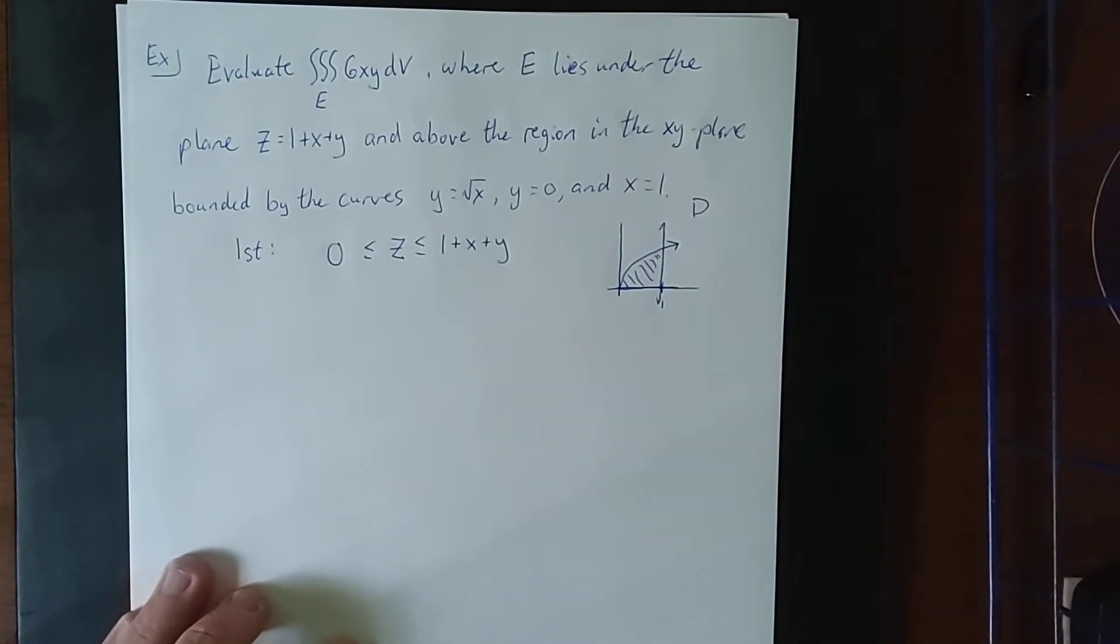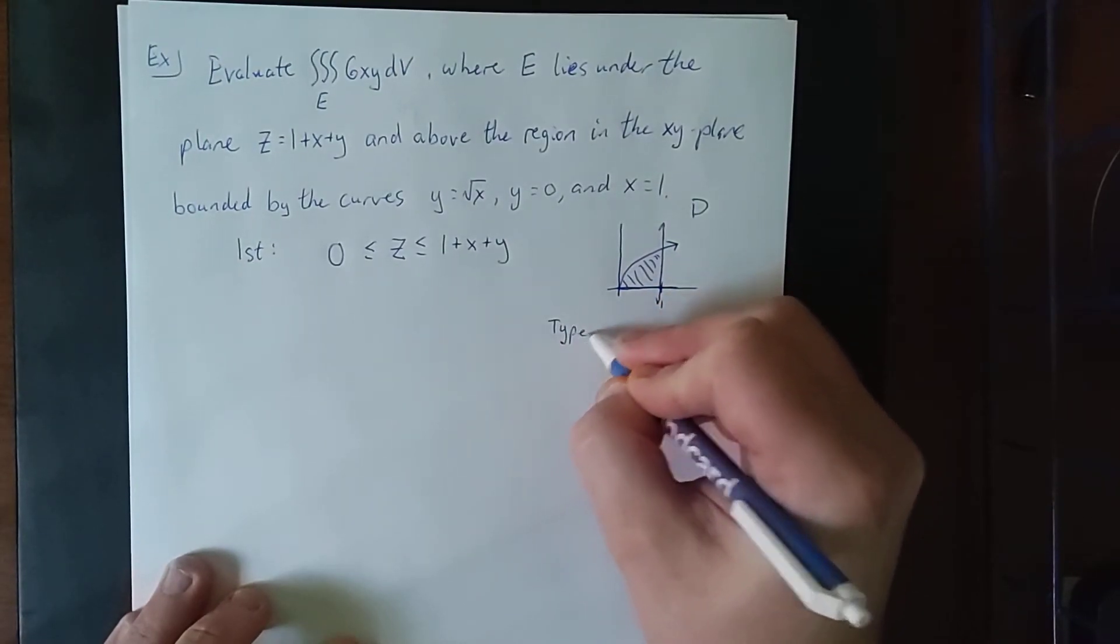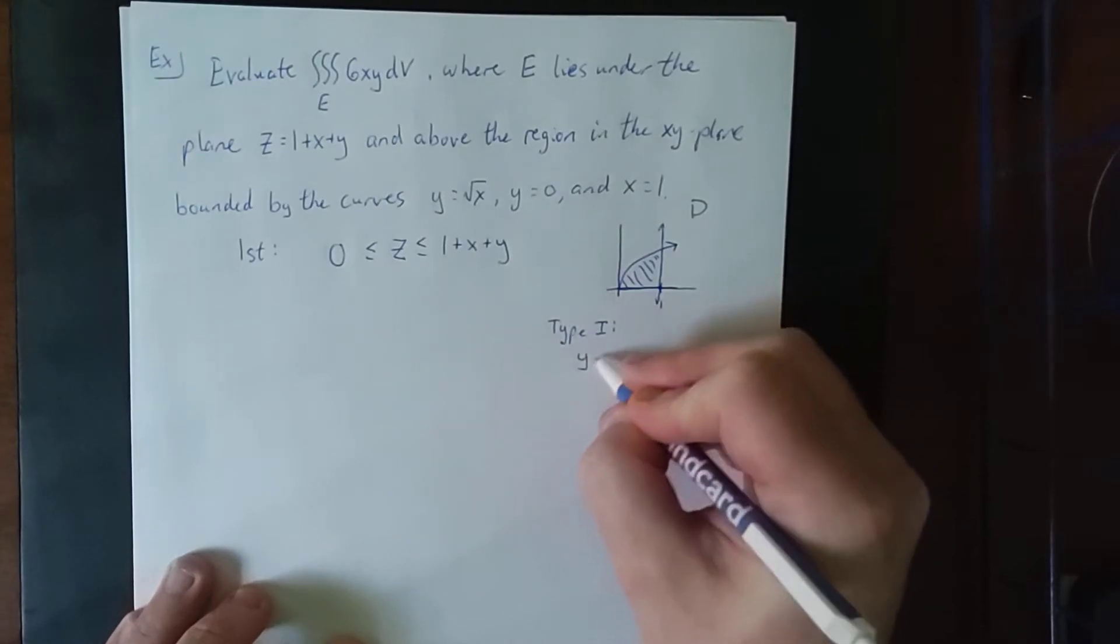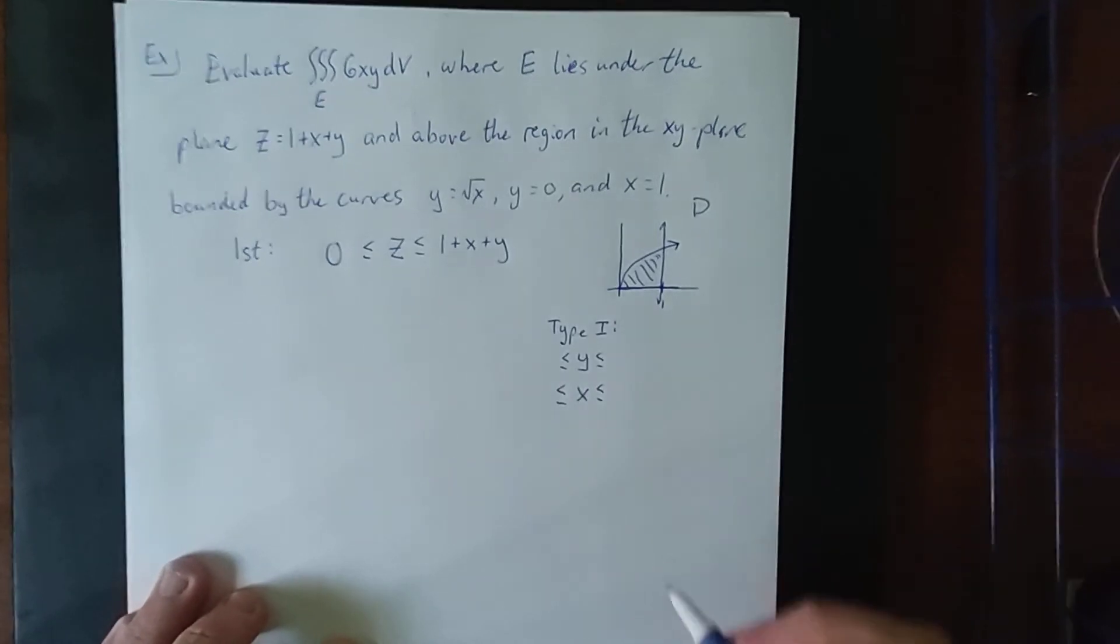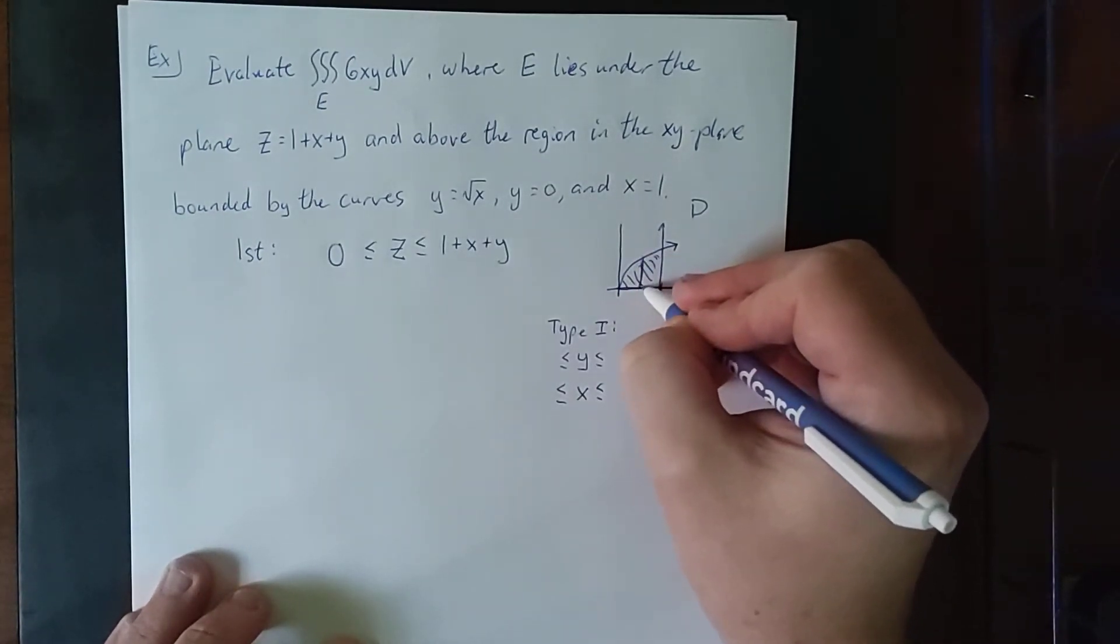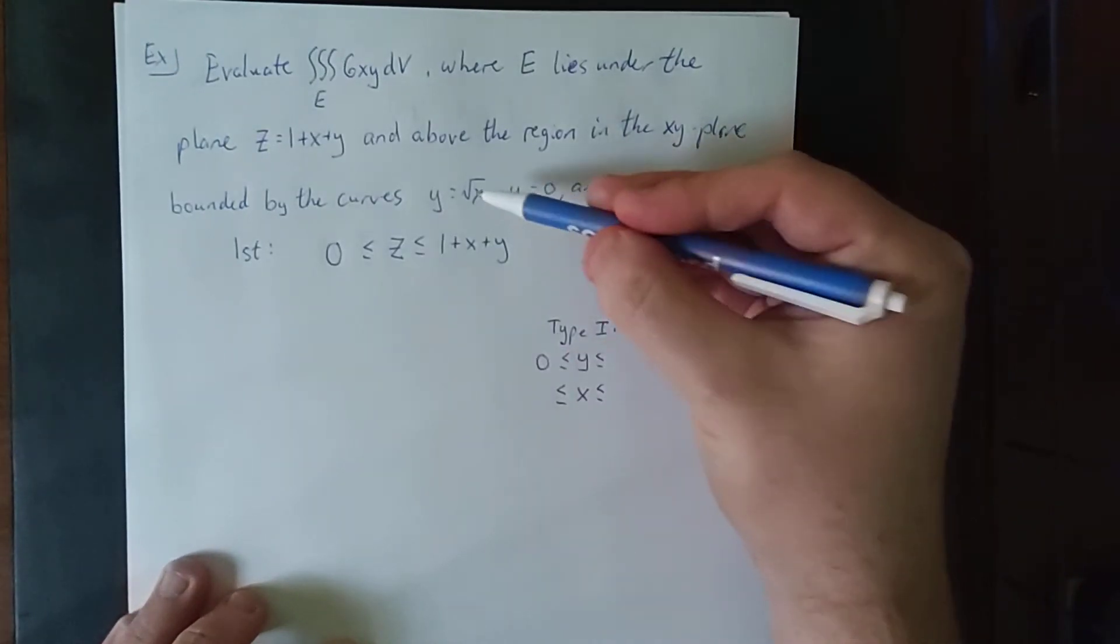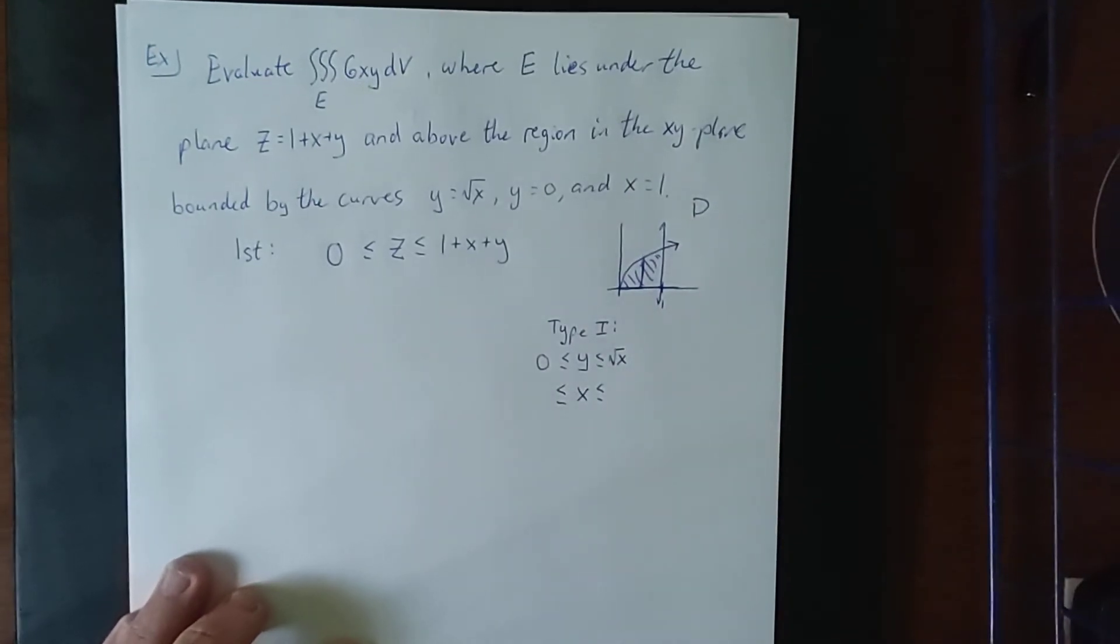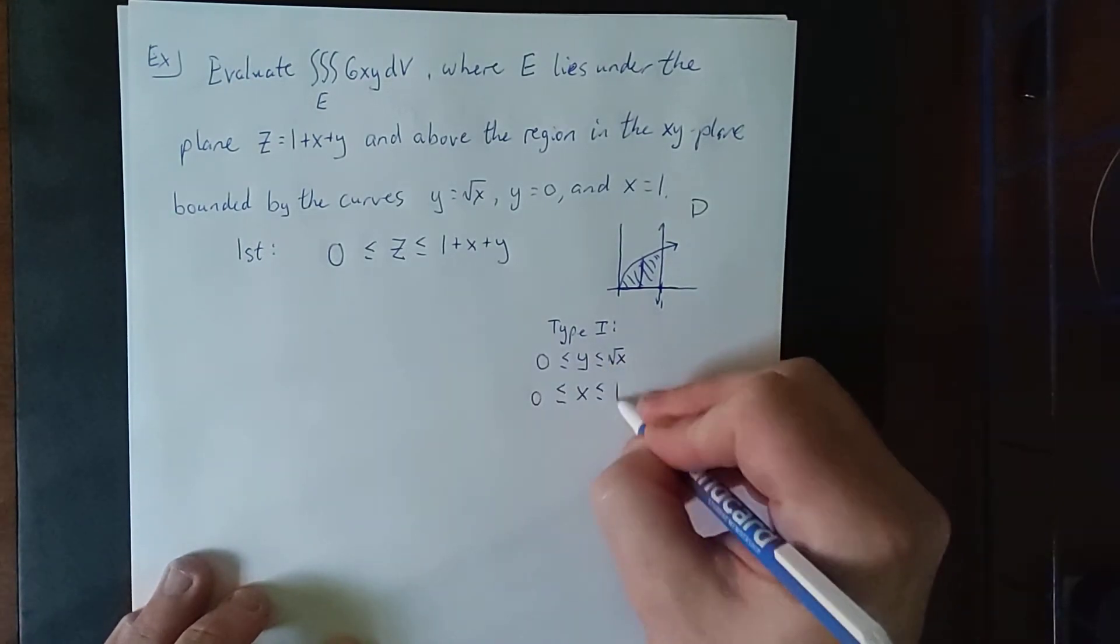So if I were interested in setting this up in terms of a type 1 region, I would be bounding y first, then bounding x. Now y would go from top to bottom. It is bounded below by the x-axis, that's y equals 0, and above by the parabola, and that was y equals the square root of x. Now x would then go from a constant 0 to a constant 1. No problem there.